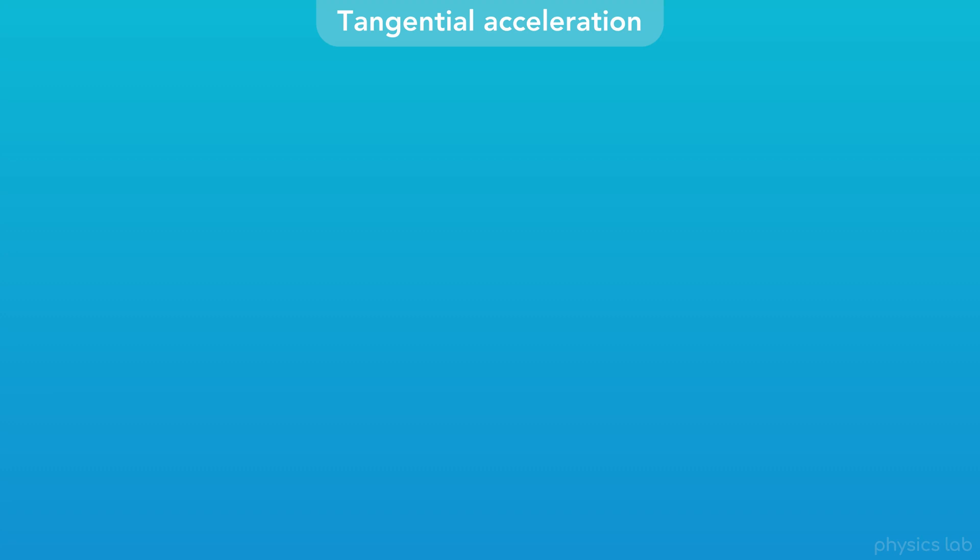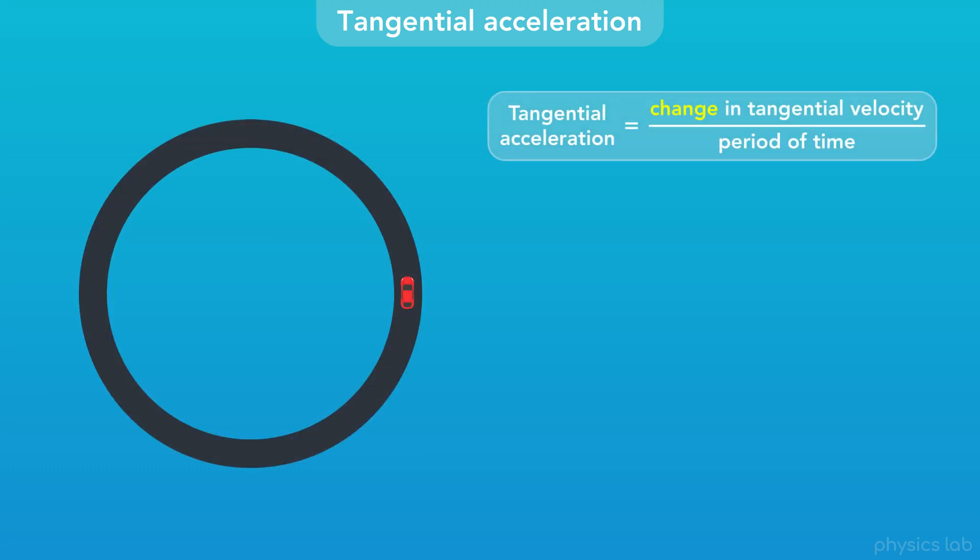Like linear acceleration, tangential acceleration is the change in the tangential velocity divided by a period of time. We represent tangential acceleration as a sub t, a for acceleration and t for tangential. The SI unit is meters per second squared, the same as for linear acceleration.